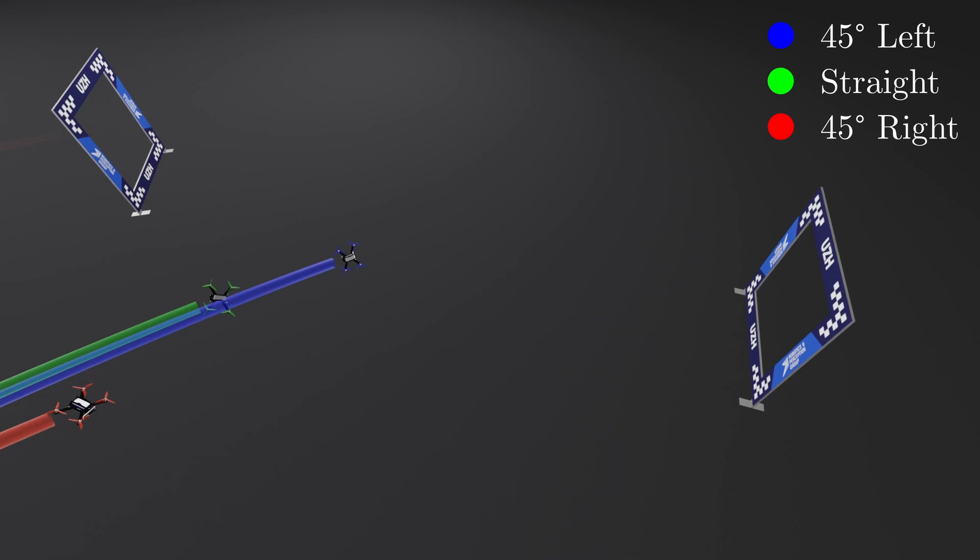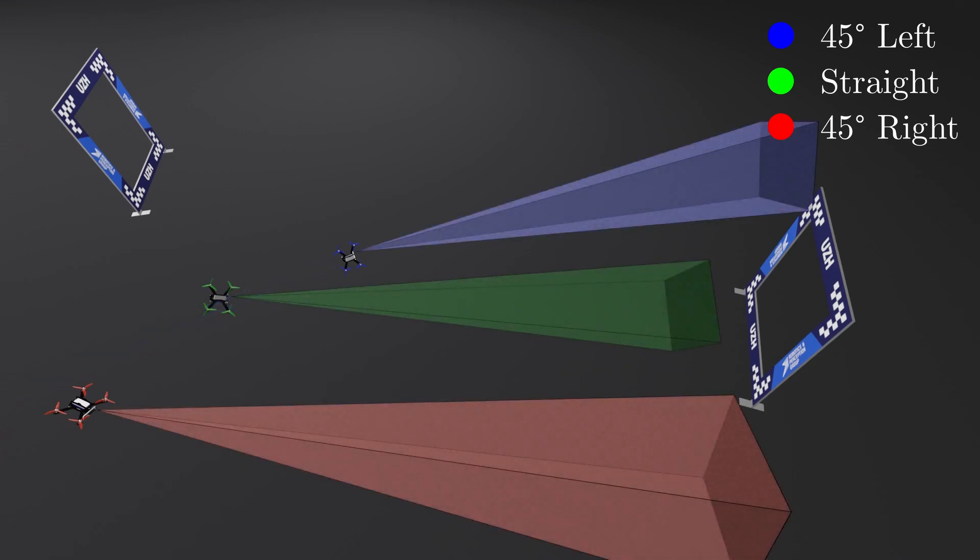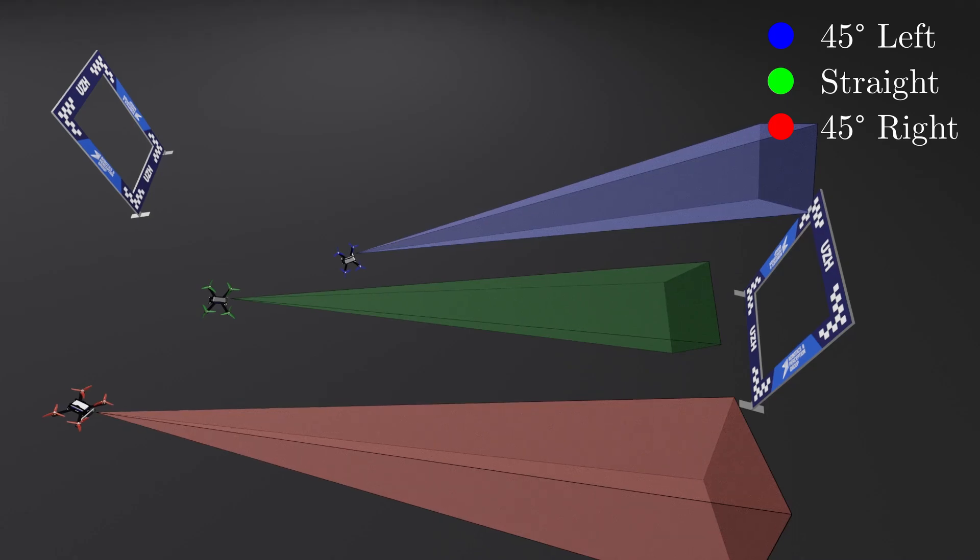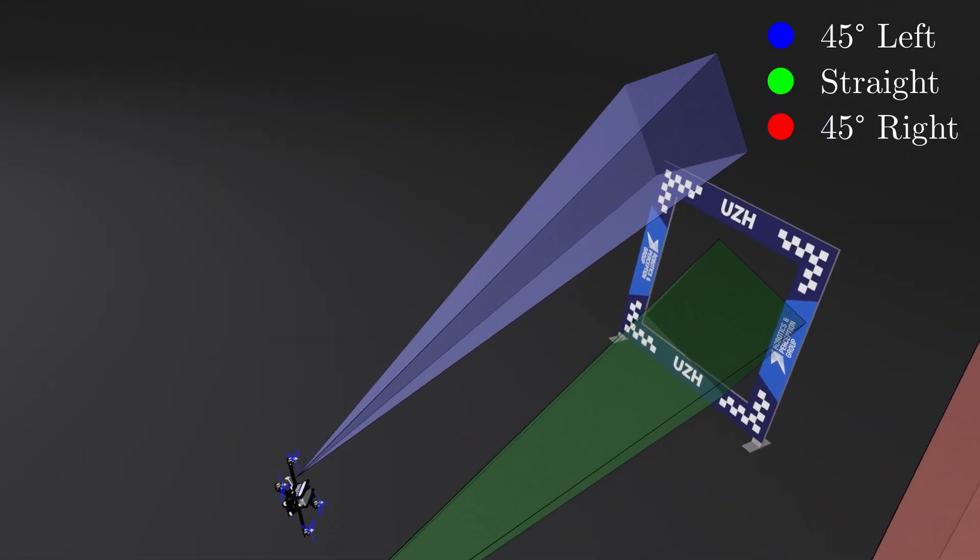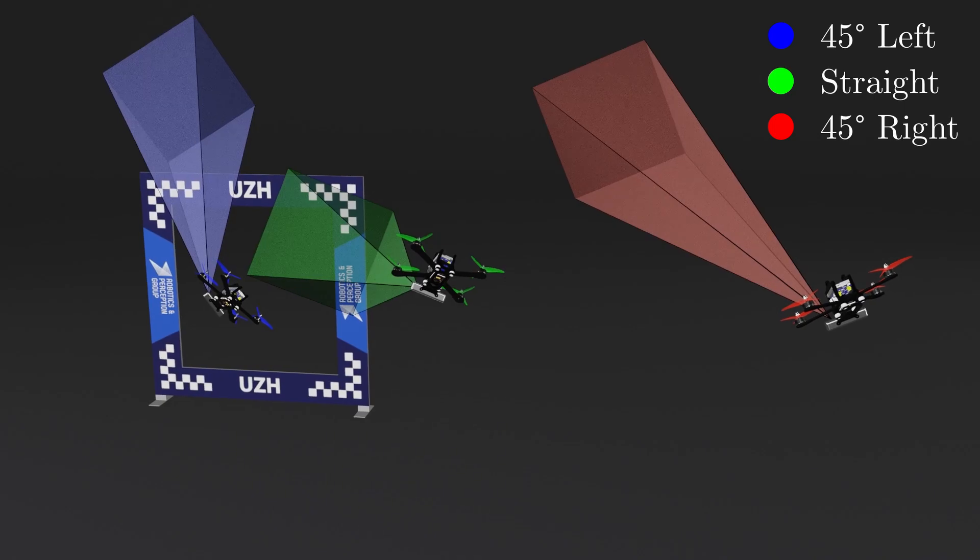If we also include where an onboard camera would point at, we can really see that only the green drone looks at the next waypoint, whereas the two other drones look to either side, as specified by the user.